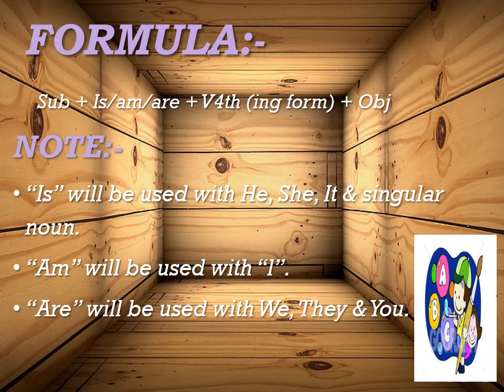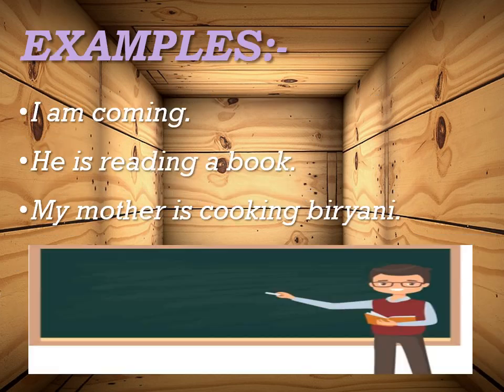Look at these examples. I am coming — main aa raha hun. Yani kaam abhi ho raha hai. He is reading a book — woh ek kitab padh raha hai. Yaha abhi kaam ho raha hai ke woh ladka ek kitab padh raha hai. My mother is cooking biryani — yani mother abhi kaam kar rahi hai, woh biryani bana rahi hai.